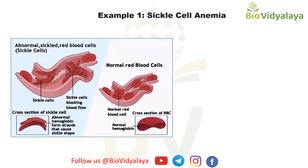Sickle cell anemia is an example of pleiotropy. We know that the function of hemoglobin is to carry oxygen to all parts of our body, and the protein part of hemoglobin consists of 2 alpha and 2 beta subunits. In the case of sickle cell anemia, one of the beta genes has a point mutation.